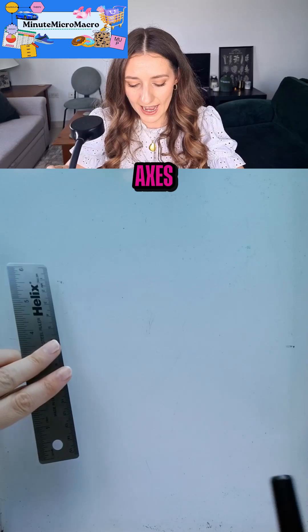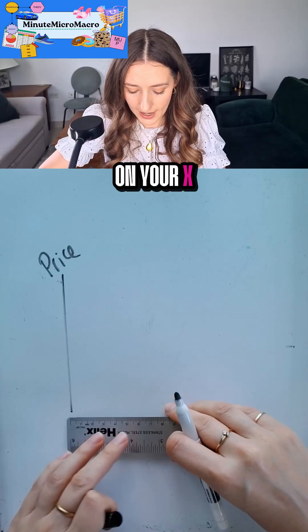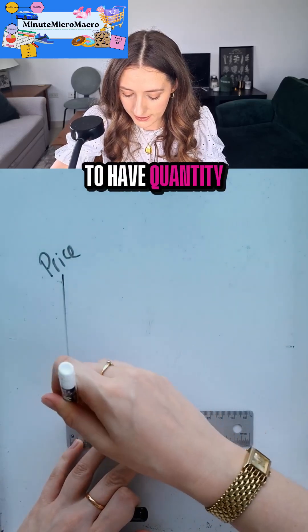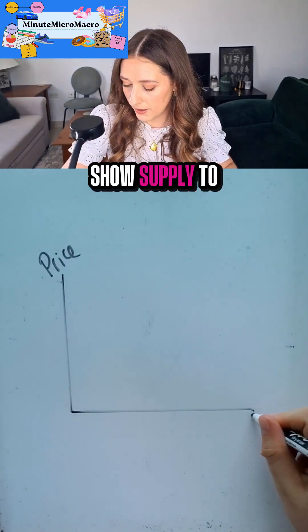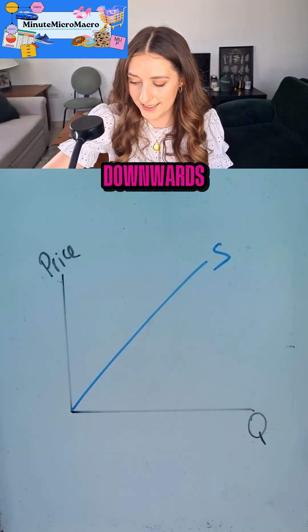Step one, you're going to draw your axes. On your y-axis, you're going to have price. On your x-axis, we're going to have quantity. We're going to show supply sloping to the sky and demand sloping downwards.